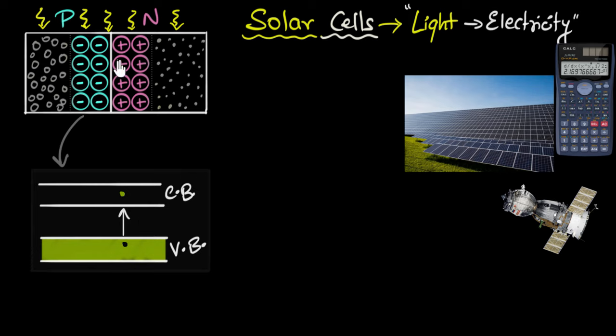However, when that happens inside the depletion region, that's when things get interesting. So imagine an electron hole pair is formed inside the depletion region. Let's say this is an electron, and this is the hole that is formed due to sunlight, due to the photons, light photons.